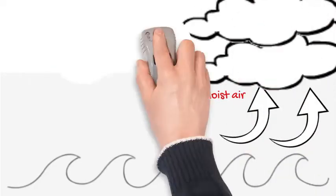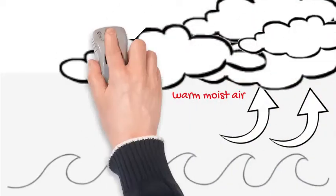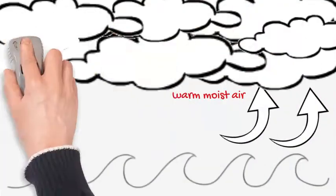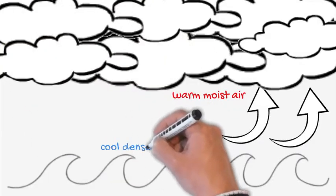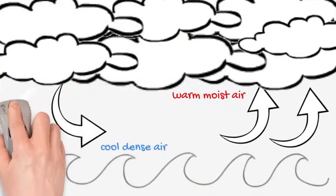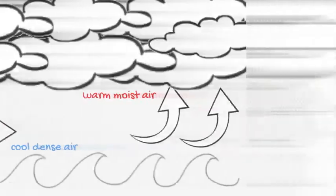This warm, moist air begins to form large cumulus storm clouds that begin to spin due to the Earth's rotation. As the storm is fed by the ocean and the clouds begin to spin, the storm grows in intensity.